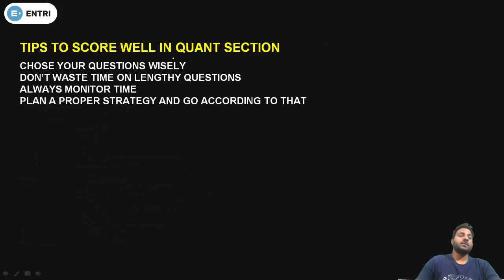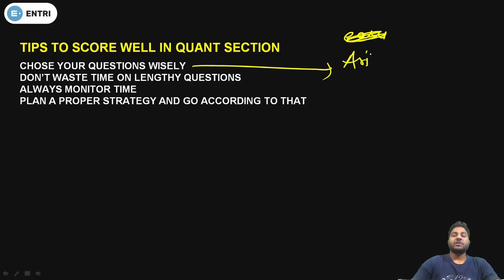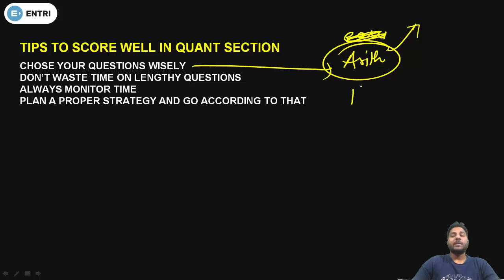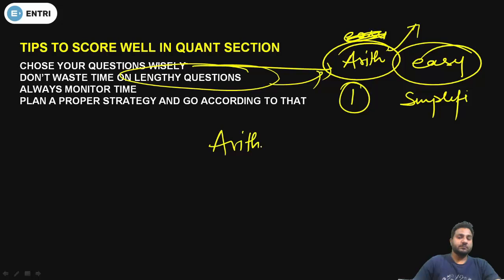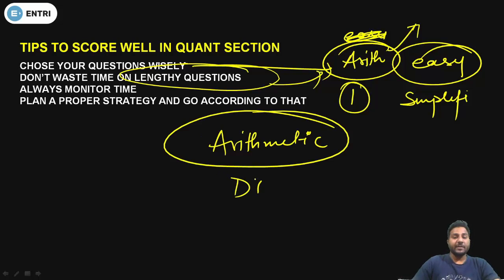Now, tips to score well in the Quant section: choose your questions wisely. If you encounter an Arithmetic question first, do not start with it — it can take more than one minute. You have to start with the easy segment, meaning Simplification, BODMAS, or Approximation questions. Don't waste time on lengthy questions; lengthy means the Arithmetic segment or the DI segment.